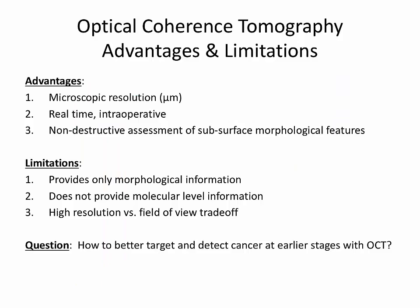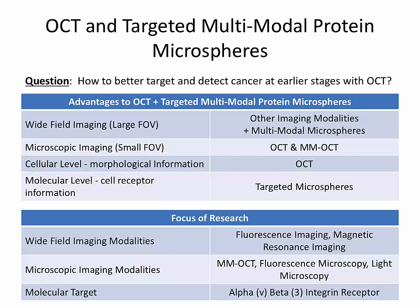OCT has been great at providing structural information, being able to see individual cells and individual scatterers, but it really doesn't get us to the molecular information or what happens before those structural changes occur. Another limitation, as with most spectroscopic techniques, is the trade-off between high-resolution imaging and field of view. Although OCT gives a wider view than most other spectroscopic techniques, it's still fairly limited by how far and how deep you can scan. So how do we try to overcome these limitations?